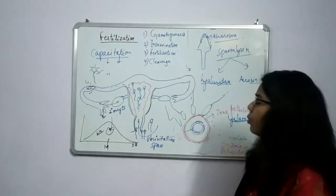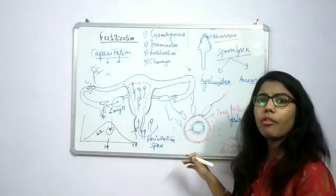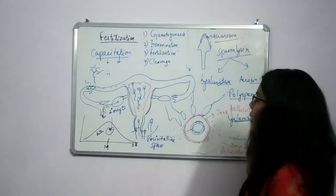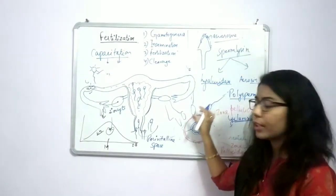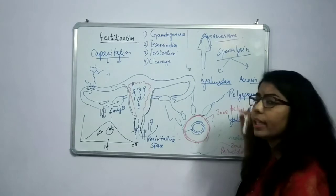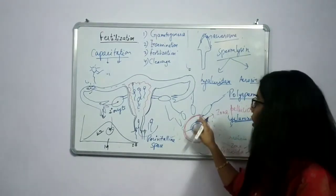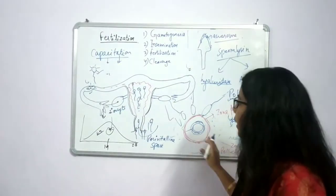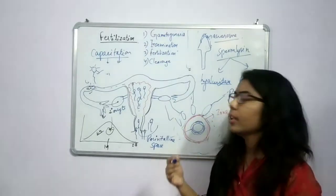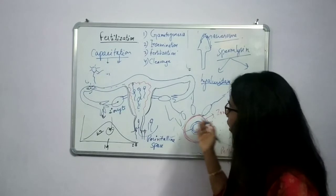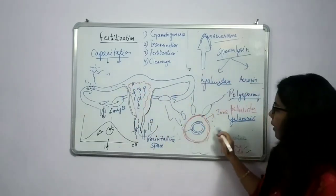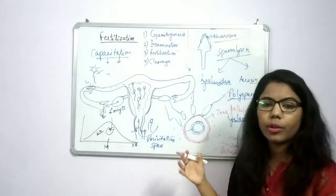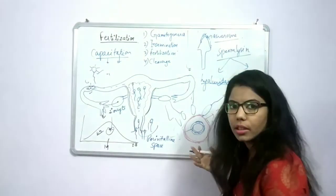Why is the thickening of the zona pellucida necessary? Its function is that when a sperm enters, only one sperm will fuse with this ovum. Because we know that 100 to 150 sperms reach here, but only one sperm will enter inside the secondary oocyte and the others will degenerate, due to this thickening of the zona pellucida. This prevents the entry of multiple sperms — a condition called polyspermy. The zona pellucida itself prevents polyspermy.